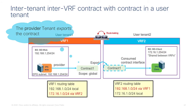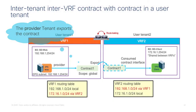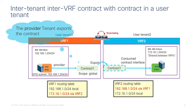Now let's consider the case where the contract is defined within a user tenant and not within tenant common. In this case you need to be clear about which tenant is the provider and which is the consumer, because the contract is exported from the provider tenant and consumed from the consumer tenant. In the UI you will see the contract appear under imported contracts. When you go to the EPG you need to define what's called a contract interface. The scope of the contract must be global, and the usual VRF sharing configurations apply.